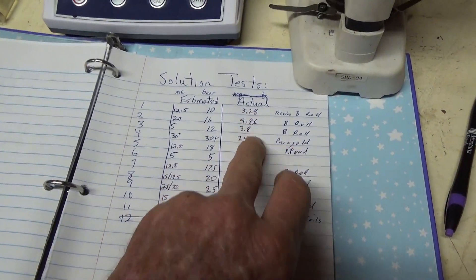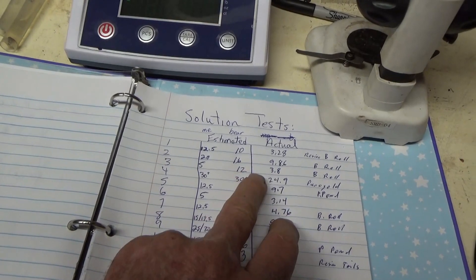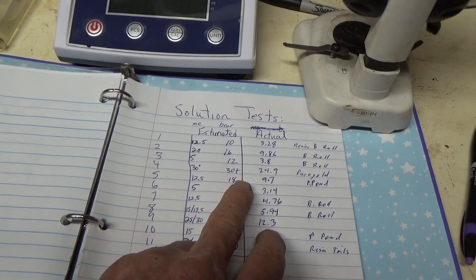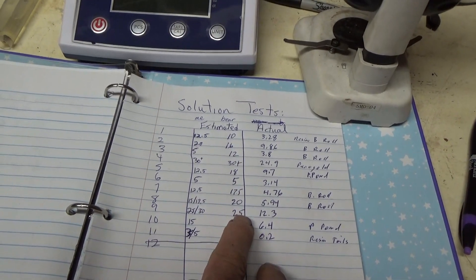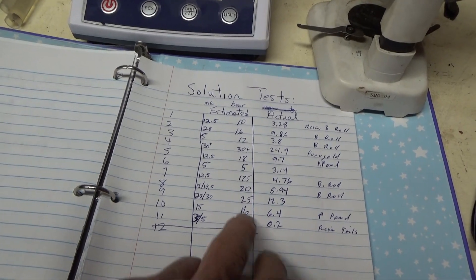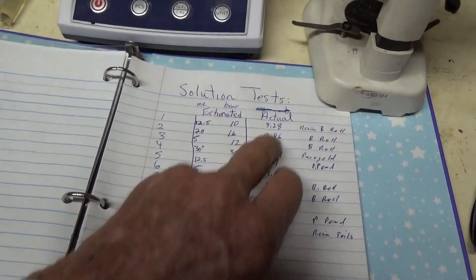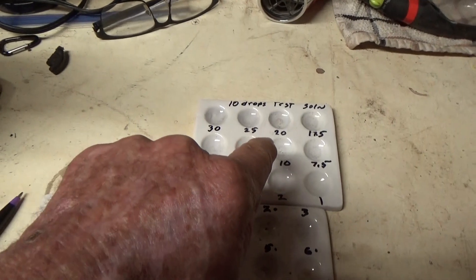If you look at this, in most cases it's two to three times, but sometimes we're estimating it four times higher than the actual. This was dried at air temperature, just left out on the counter overnight. This was forced dry.